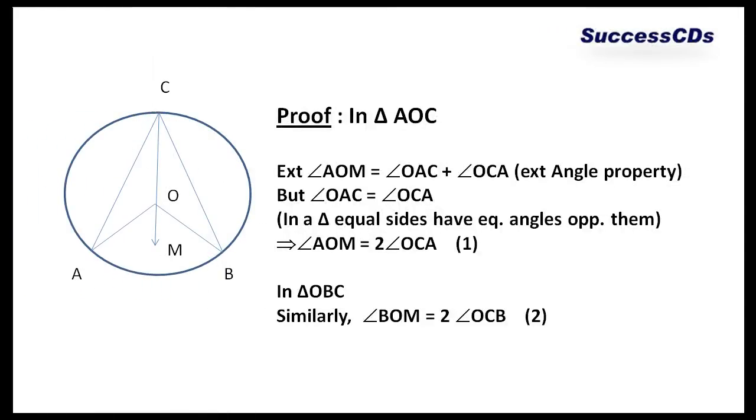Now let's take a look at the proof. In triangle AOC, there is exterior angle AOM. This exterior angle AOM, if you look carefully, is equal to angle OAC plus angle OCA by exterior angle property, which states that in a triangle, exterior angle is equal to sum of interior opposite angles. But angle OAC is already equal to angle OCA. In a triangle, equal sides have equal angles opposite them always. Therefore, angle AOM will be 2 times angle OCA. We write it number 1.